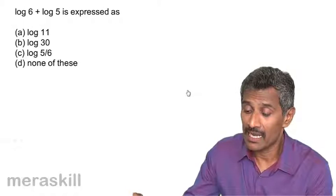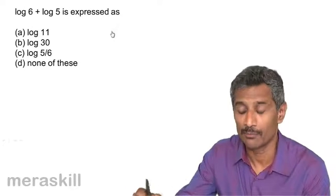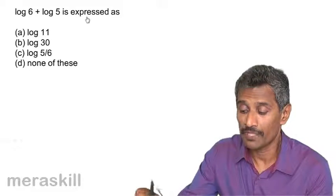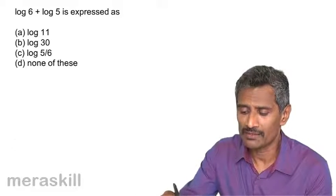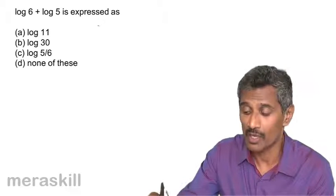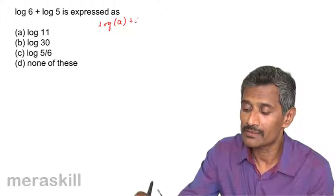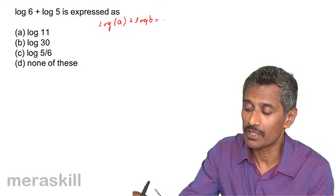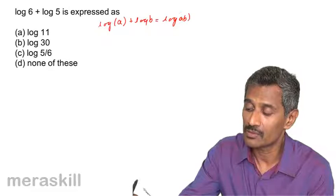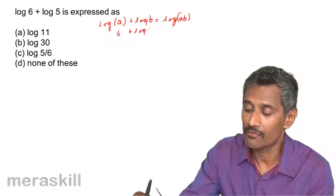Let's see how we can use logarithm rules in simple problems. For example, log 6 plus log 5. We know that log A plus log B is nothing but log AB, so log 6 plus log 5 equals log of 6 times 5.